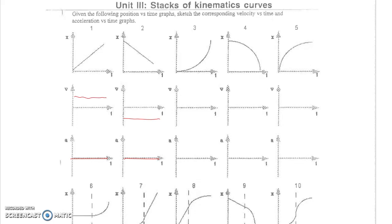Looking at one of these position versus time graphs with curves — in this class the only curve we'll have is part of a parabola, parabolic in nature. That means all the problems involve constant acceleration. Looking at this graph, we start at a position of zero and it gets more and more positive. Initially we have a very small change in position, so velocity starts at zero, but then our position gets bigger and bigger over time, so velocity starts at zero and increases — a straight line — meaning we have a constant positive acceleration.